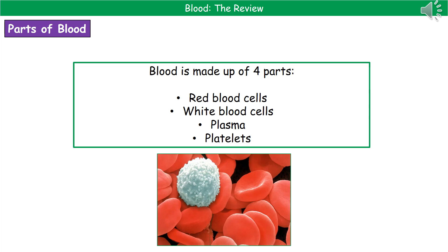Welcome to our review on blood. The first thing we need to know is what blood is actually made of, and there are four parts you need to know: the red blood cells, the white blood cells, plasma, and platelets.